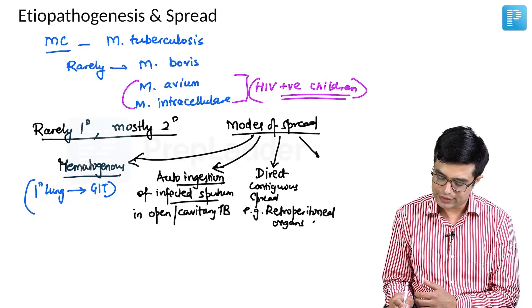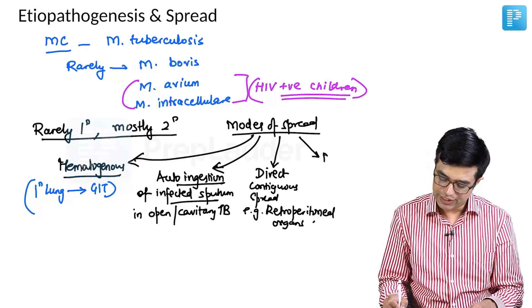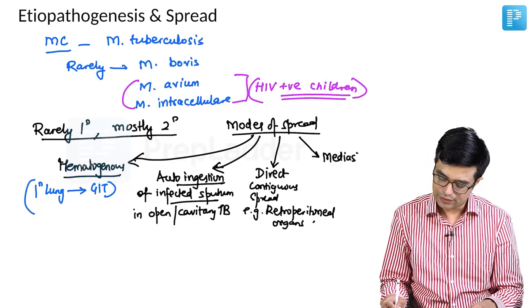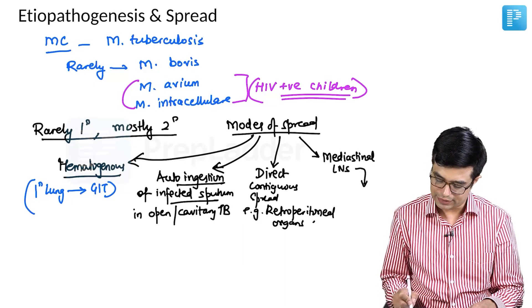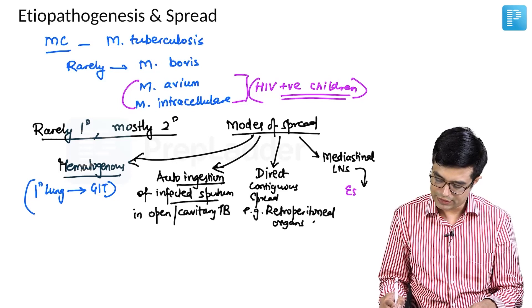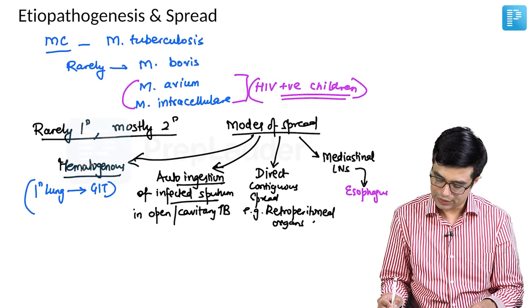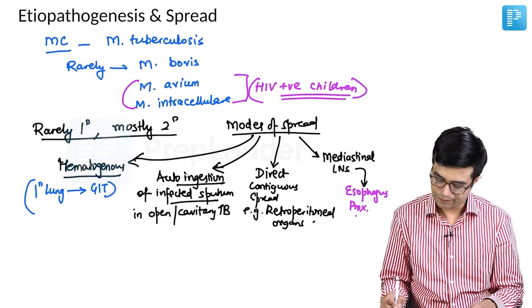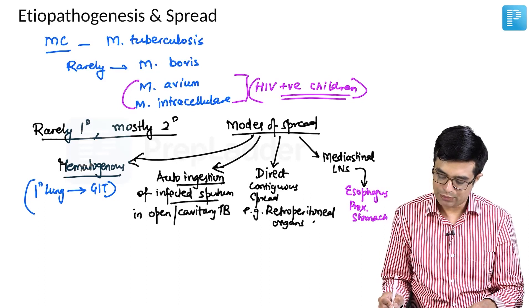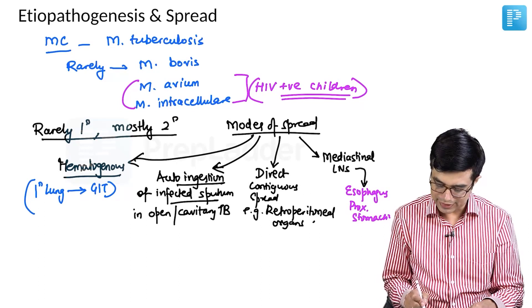And fourth mechanism is through the mediastinal infected lymph nodes. They can spread the disease to esophagus and sometimes even the proximal stomach. So, these are the major routes of spread in the secondary form.